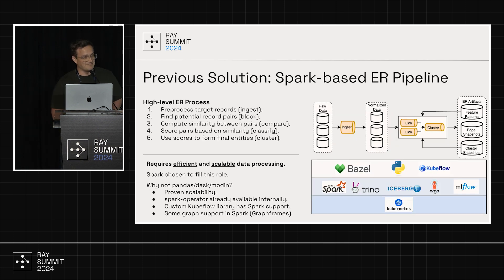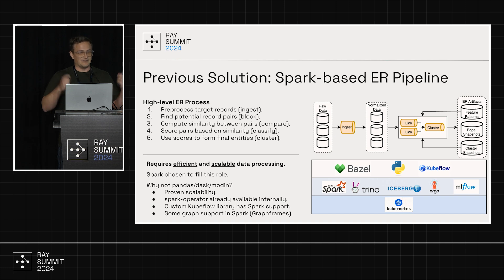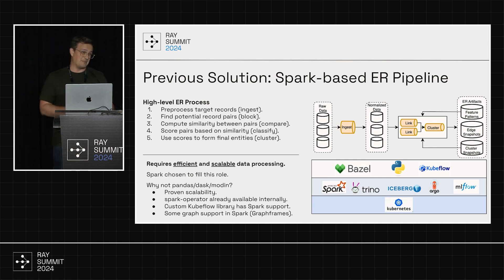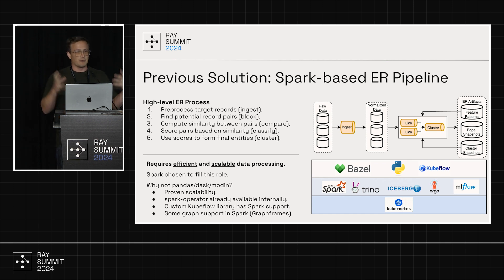Our previous solution — one we're still shadowing while we test the Daft solution — was based on Spark. At a high level, if you've done entity resolution, it can be a beast if you don't do it right and you can explode the problem. You preprocess your data, figure out which records to compare in a fast and scalable way, compute similarity between them — your feature generation step — then you score them, either rules-based or with an ML model, forming weighted edges between records. Then you reconcile all those weighted edges into a final set of disjoint entities.